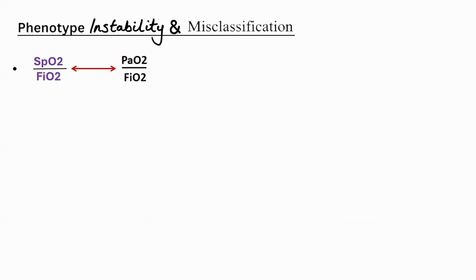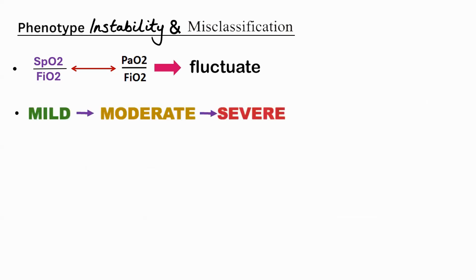Regarding instability and misclassification: when a patient comes to the ER, their SpO2/FiO2 may be low, but giving a little oxygen may change them from one phenotype to another after initial resuscitation. There is a dynamic change in the way ARDS progresses. What you identify at the outset may not remain in that subcategory after a few hours. The disease itself may keep changing from mild to moderate, or may appear severe and suddenly become mild after resuscitative measures.